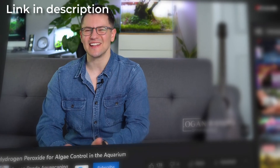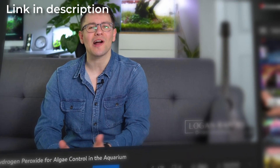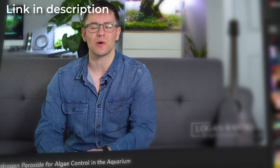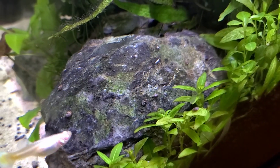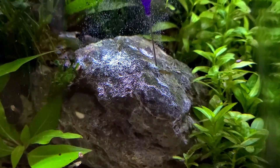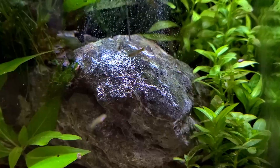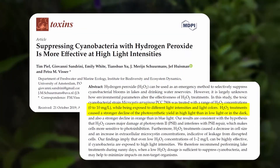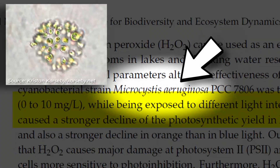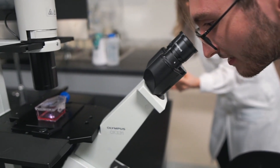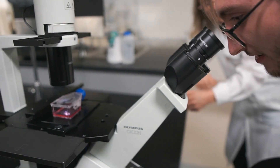Logan Rando has an in-depth scientific breakdown video of how hydrogen peroxide actually kills algae. Hydrogen peroxide has shown to be effective in suppressing cyanobacteria, or blue-green algae blooms, in lakes and water reservoirs, especially at higher light intensities. Mind you, this paper only used a single strain of cyanobacteria, so it may not apply to other strains — and I'm not a biologist, so I wouldn't know either.